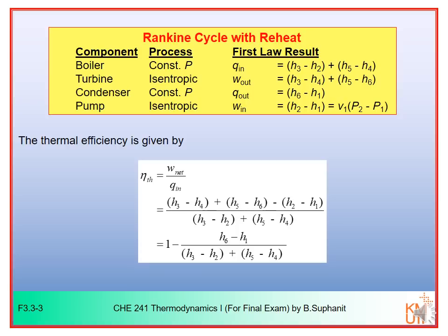Now let's look at the calculation of thermal efficiency. The thermal efficiency can be calculated using the same concept — what we get divided by what we give: W_net divided by Q_in. But in the reheating scheme, W_net would be changed. W_net would come from the turbine work from both stages: W_turbine_1, W_turbine_2, minus the pumping work W_pump.